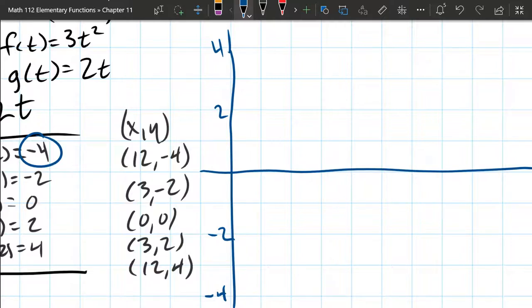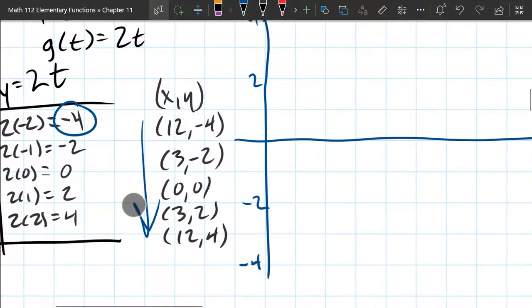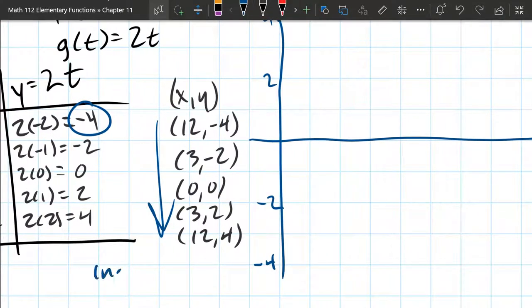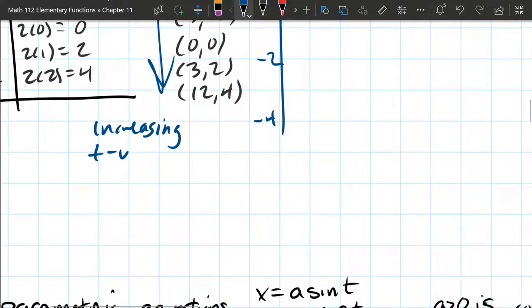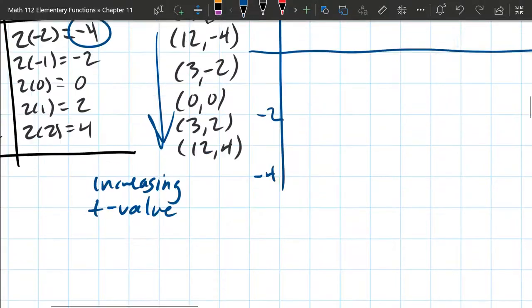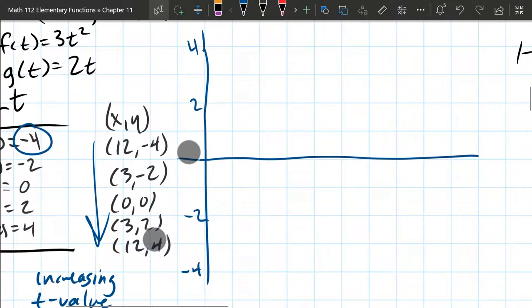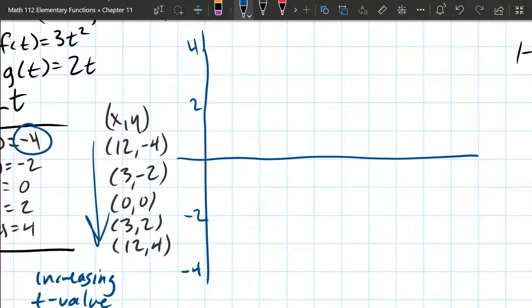I like to plot them in the order of increasing t value. As long as you're careful when you build your table, these are increasing t values. We'll start, let's see, we need 12 and three for x values. There's three, four, five, six, seven, eight, nine, ten, eleven, twelve.